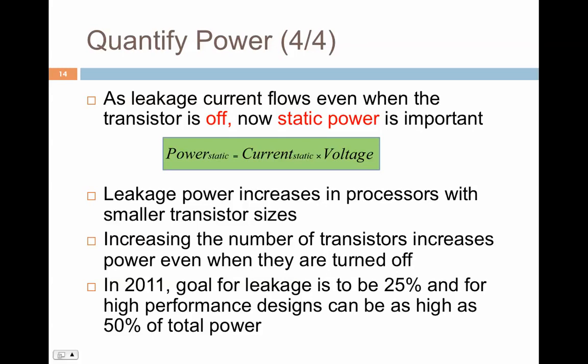When talking about the dark silicon problem, you also have to think about the number of transistors that are off, because they too will dissipate some power in terms of leakage.